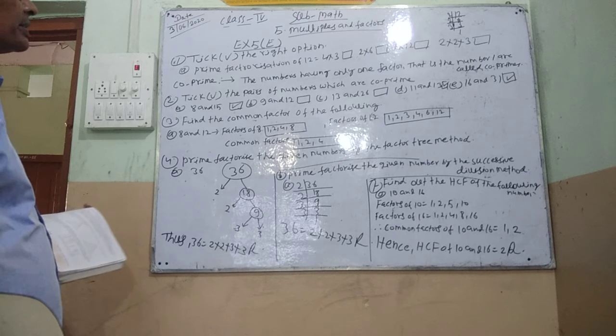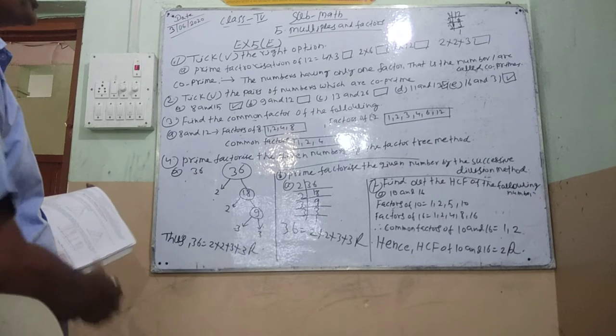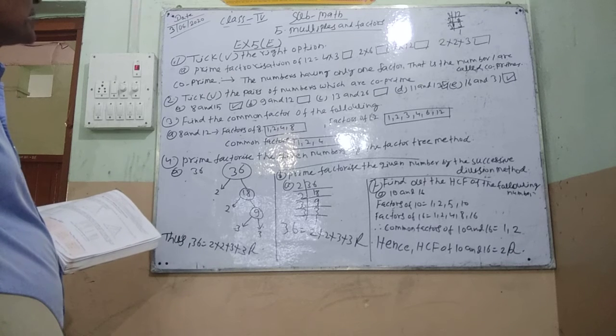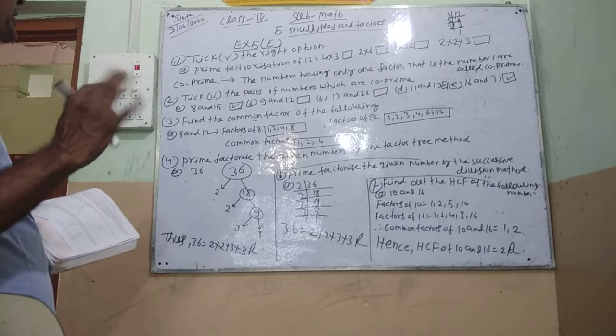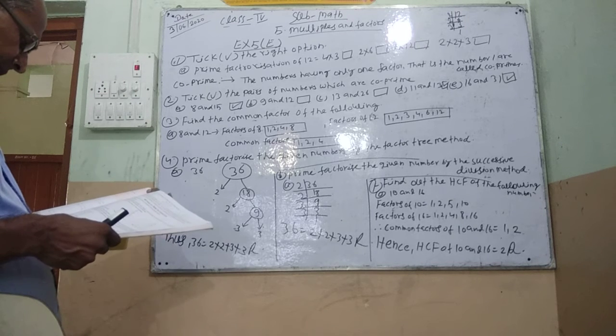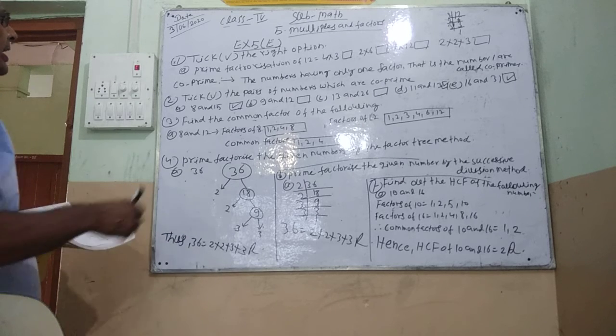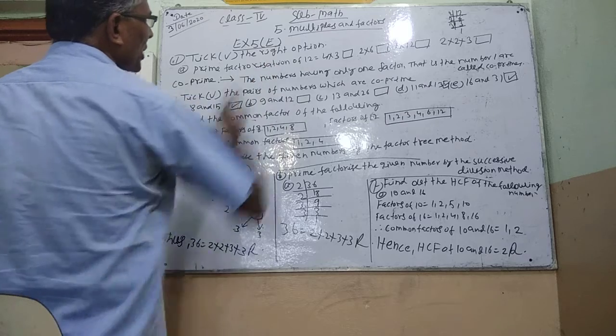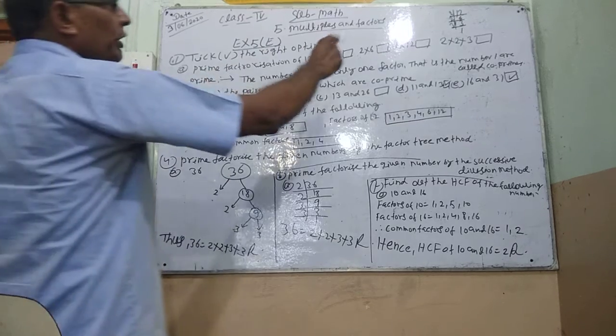This is the subject of multiples and factors. There is prime factorization here. Two equals seven, two equals six.